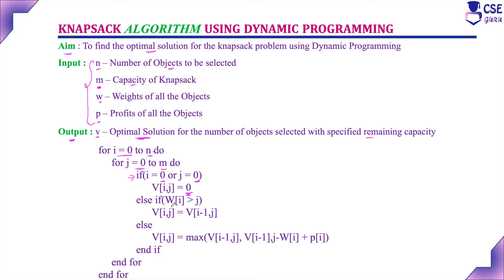Otherwise, if w(i), the weight of the particular object, is greater than j, the maximum remaining capacity, we cannot place that object into the knapsack. So we cannot consider that object to add it. In that case, V(i, j) equals V(i−1, j). That is, we are not adding that particular object and not considering its profit — this is a reflection of the previous step. We exclude this object since its weight exceeds the maximum capacity.